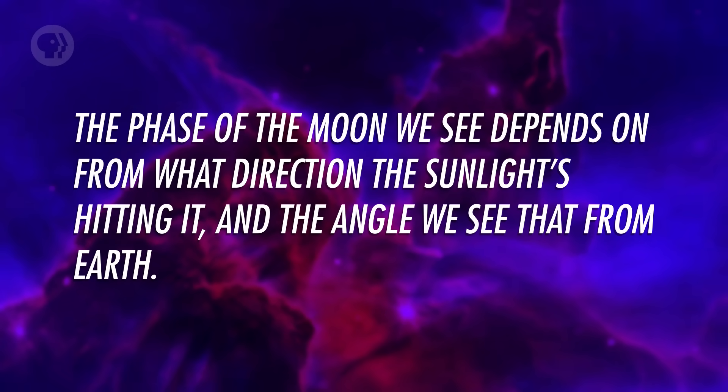The Moon orbits the Earth roughly once per month. In fact, that's where the word month comes from. Month and moon are cognates — words that have similar etymological histories — and in most languages, including English, the two words are very similar. The length of time we call the month is derived from the length of time it takes the Moon to go through all of its phases: 29 and a half days.